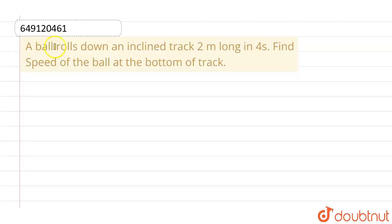Hello everyone. If we talk about this question, the given question is: a ball rolls down an inclined track 2 meters long in 4 seconds. We have to find out the speed of the ball at the bottom of the track.